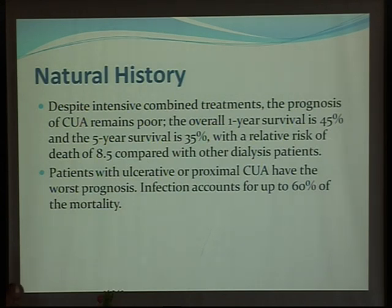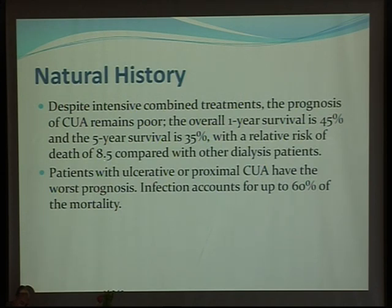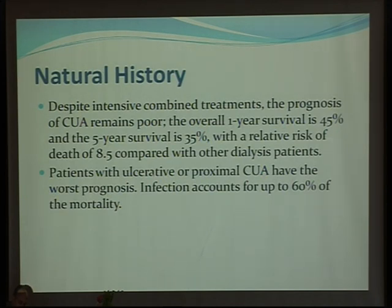Regarding the natural history of patients with calciphylaxis: despite intense treatment, the prognosis remains poor. The overall one-year survival is 45%, and five-year survival is only 35%, with a relative risk of death 8.5 times compared with other patients without calciphylaxis. Patients with ulcerative or proximal calciphylaxis have the worst prognosis, with infection occurring in up to 60% as a cause of mortality.